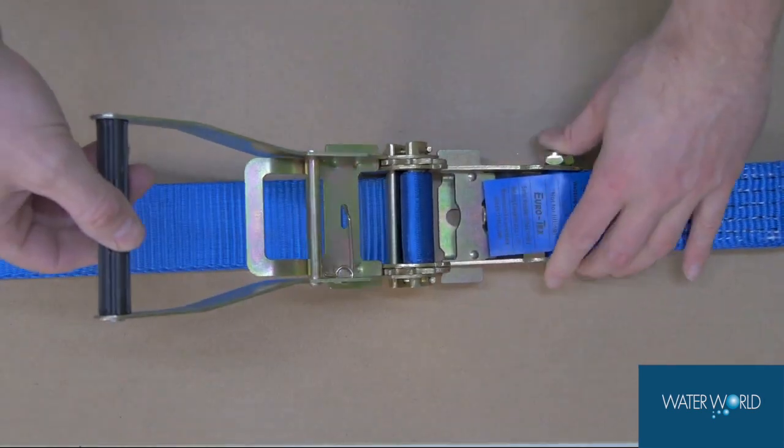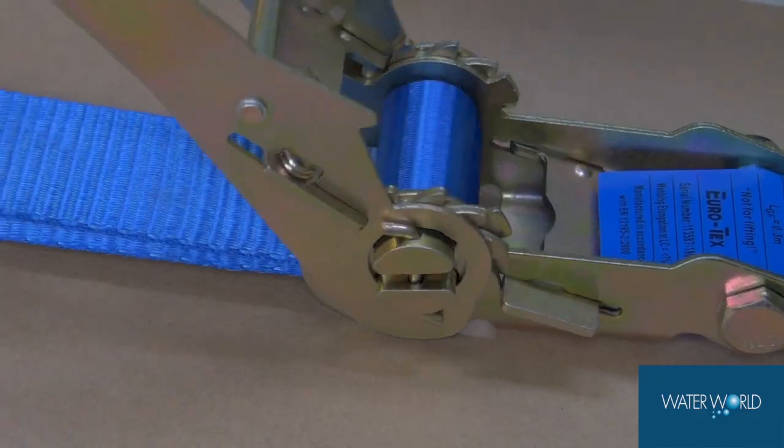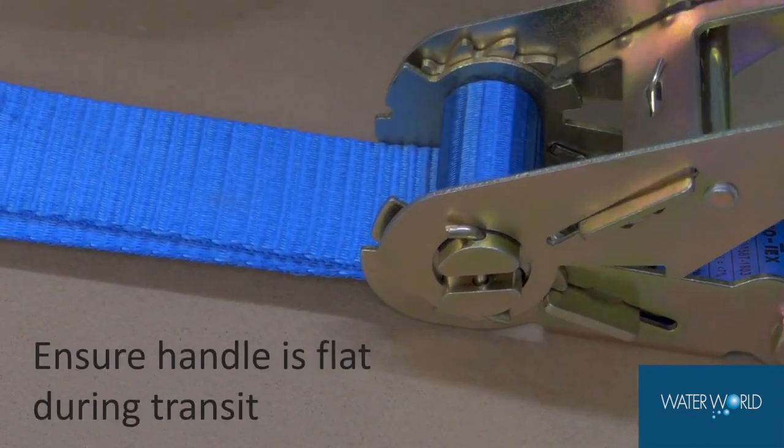Start ratcheting by raising and lowering the handle. Once you've reached the desired tension, fully close the ratchet, ensuring it's locked down.